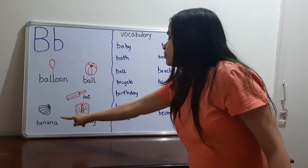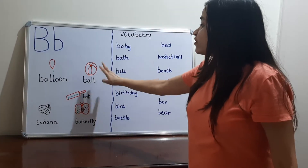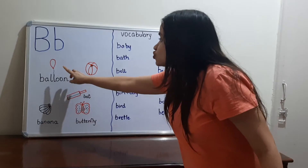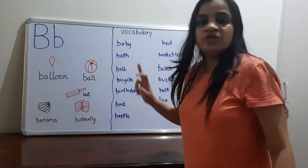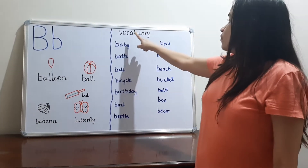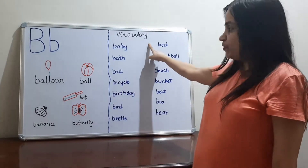After introducing these words — balloon, ball, bed, banana, and butterfly — try to ask your child to associate the picture with the word.